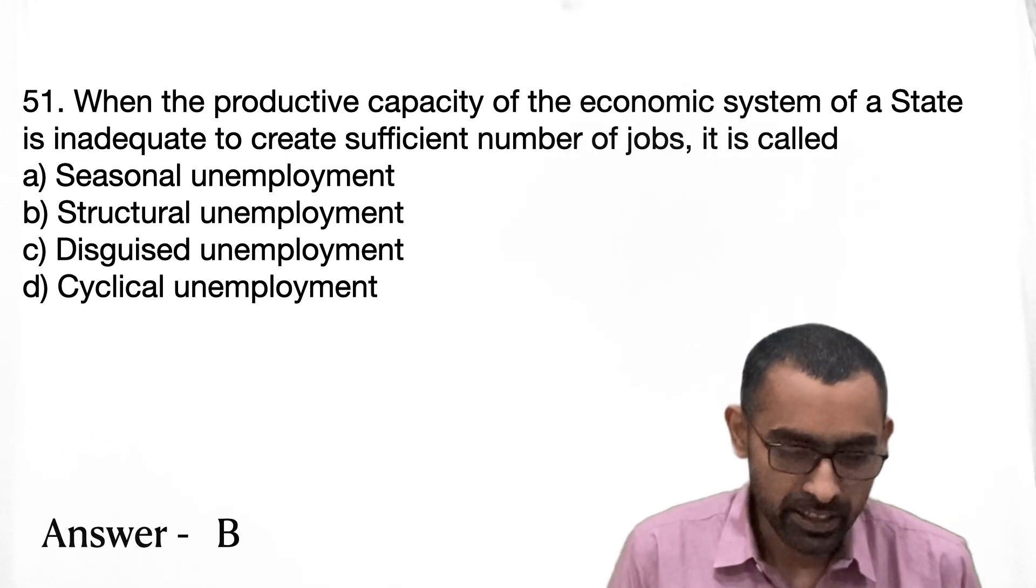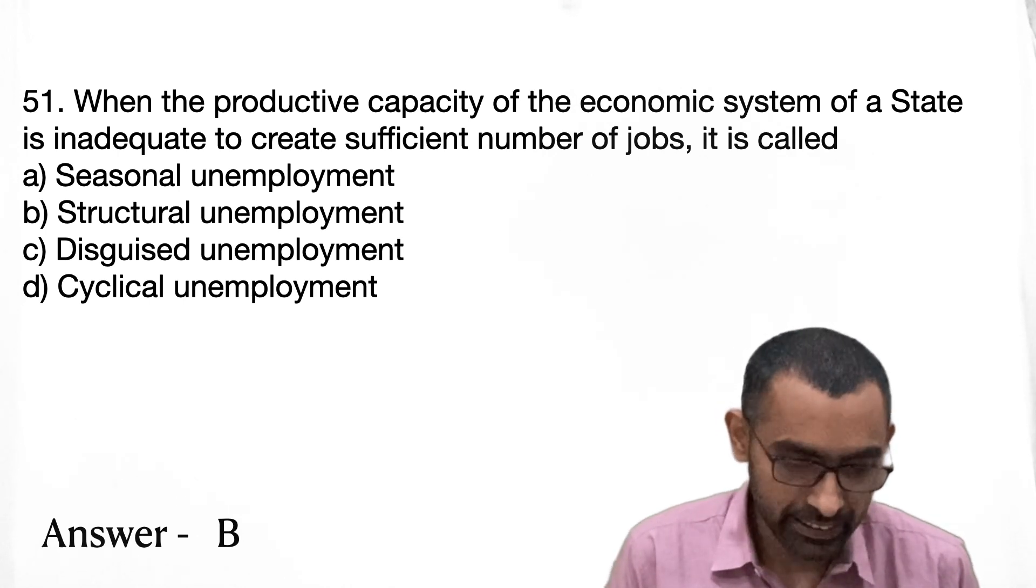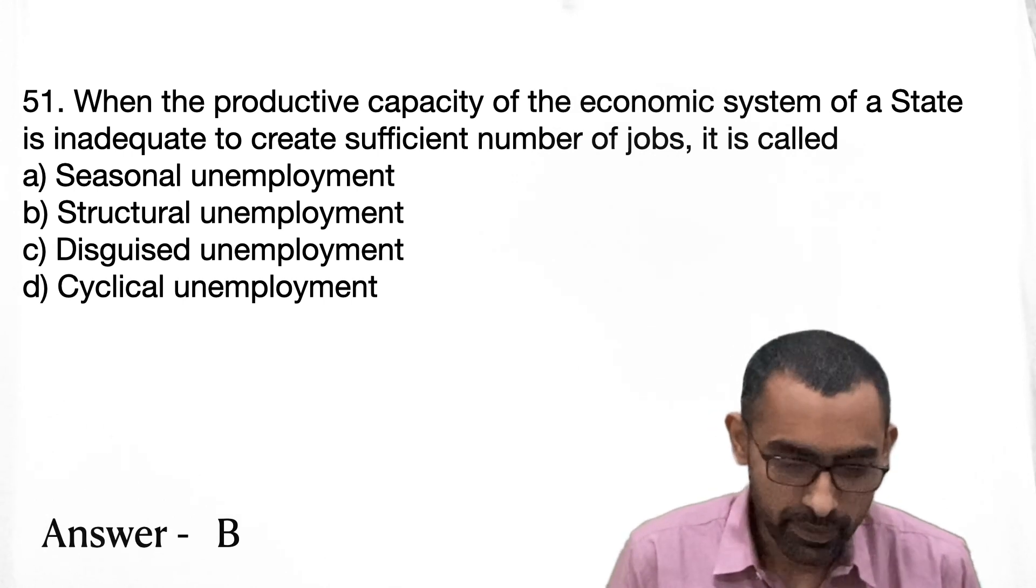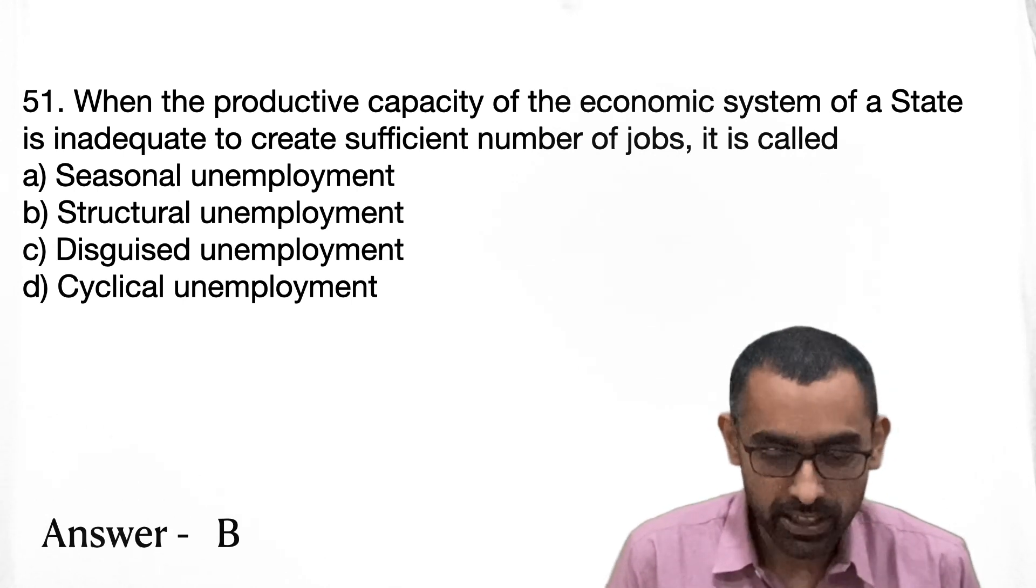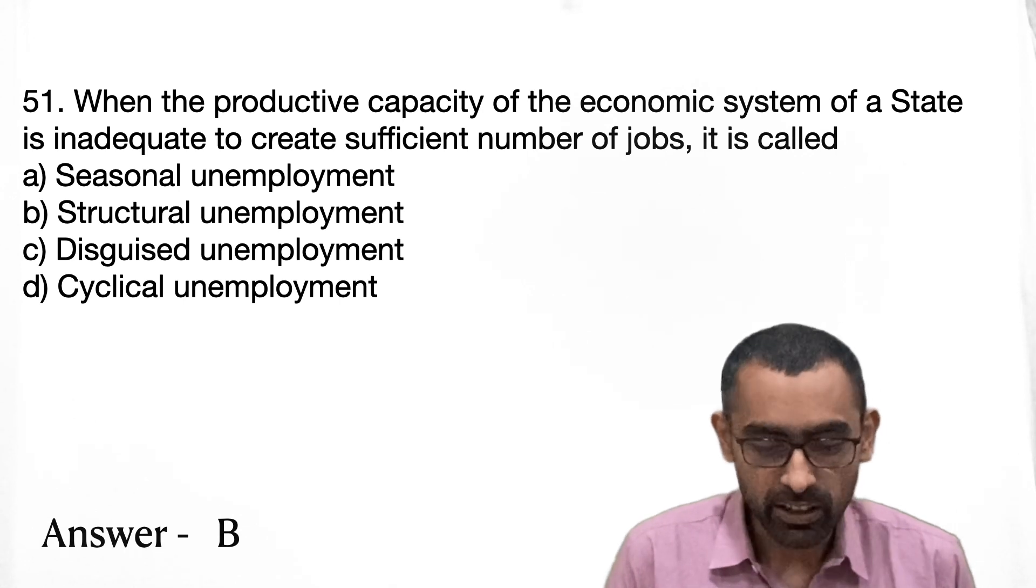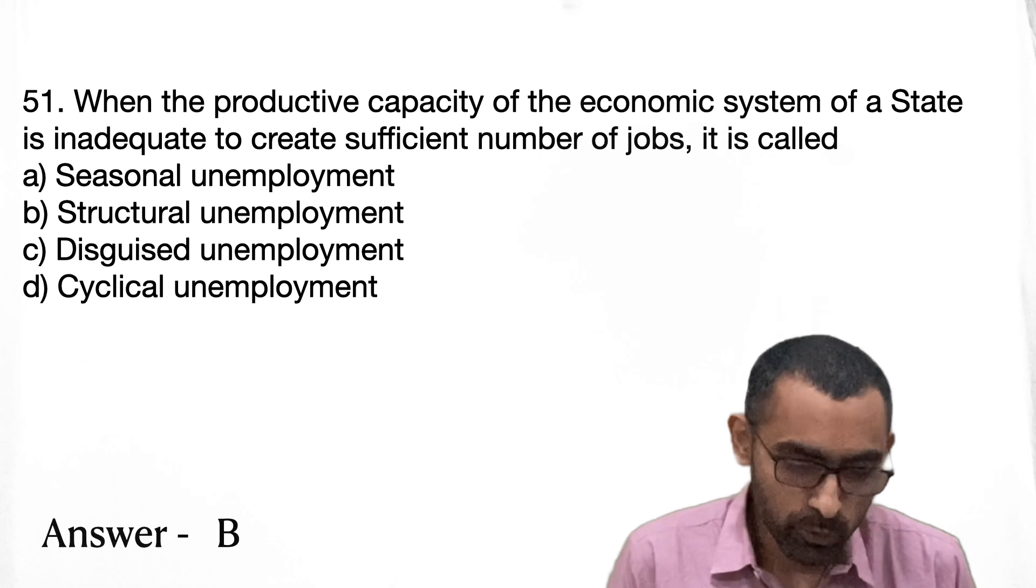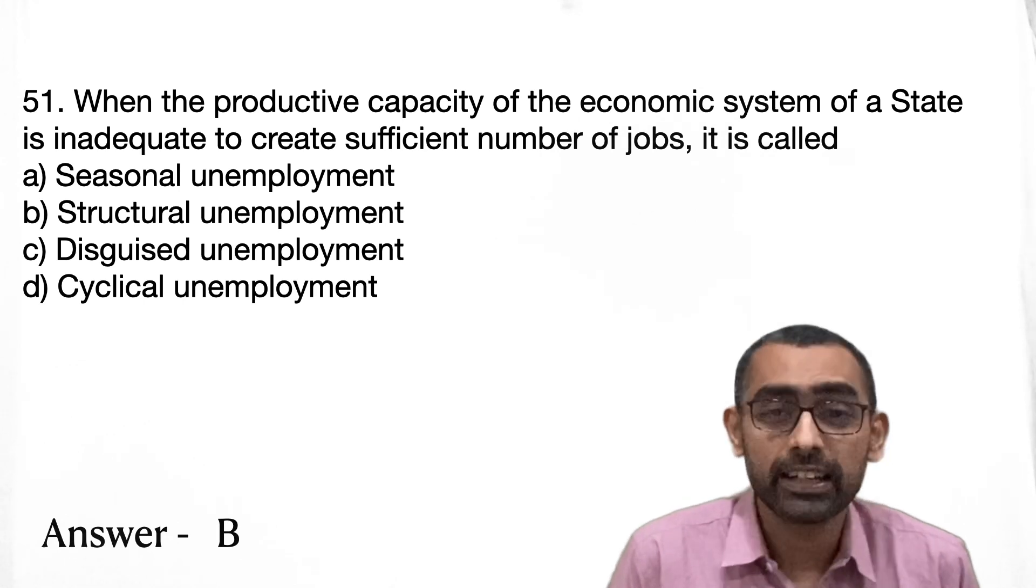Question number 51 is about unemployment and there are different options given. So it says that when there is a problem with the system itself, when inadequate number of jobs are being generated because of the capacity of the economic system of the state. You have to understand what are these different types of unemployment.